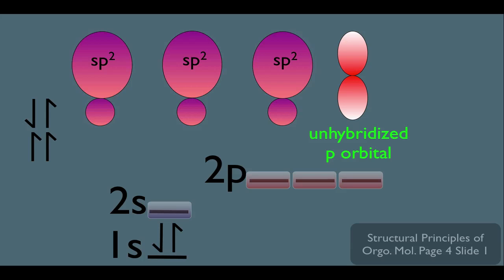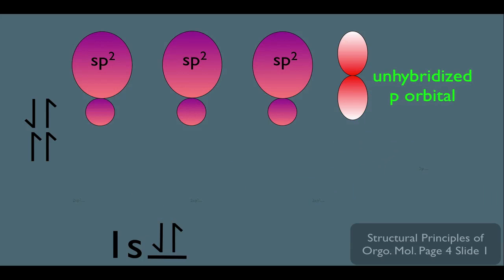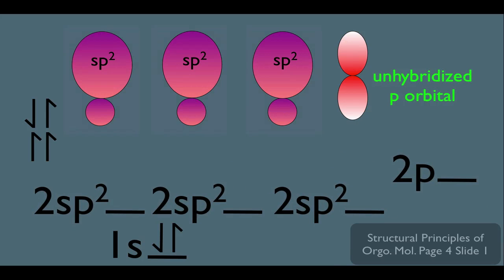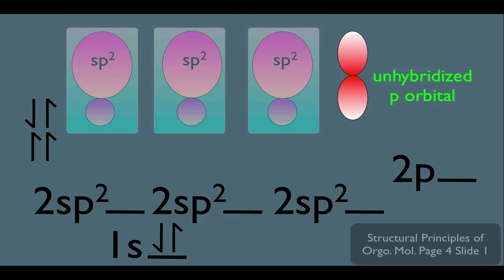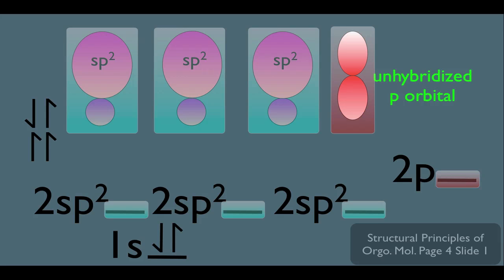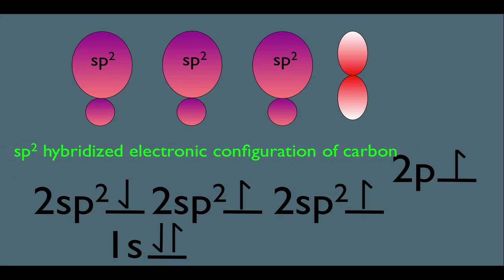So what have we done to carbon's electronic configuration? We've totally rearranged his second shell, so now his new second shell looks like this. Notice this reflects the three sp² orbitals that we got right here. And we also still have the unhybridized p orbital right here. And now let's simply put the electrons back into the orbitals, but let's put one electron in each of the orbitals here. What you see in front of you is the electronic configuration of an sp² hybridized carbon.